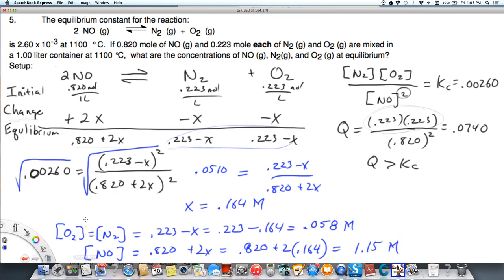So the important thing is when we're given values for everything, we don't know what's going to go up and what's going to go down. That's when we need to use Q. If Q is greater than K, that means we have too many products, so we need to go down or make the negative X here on the product side in order to establish equilibrium.